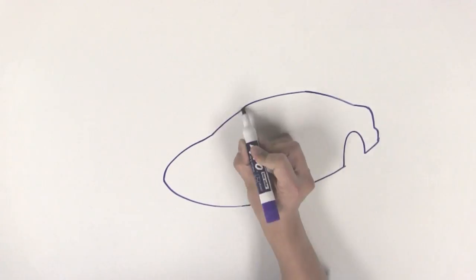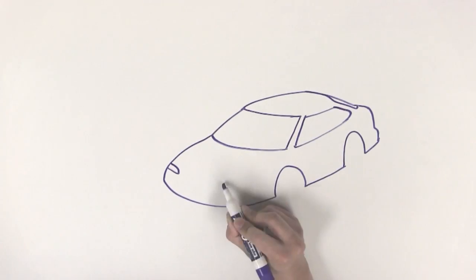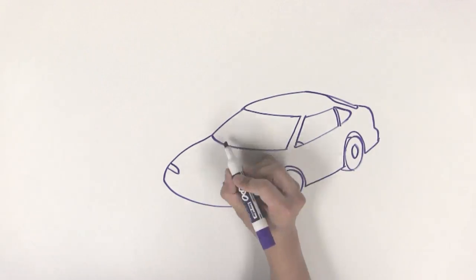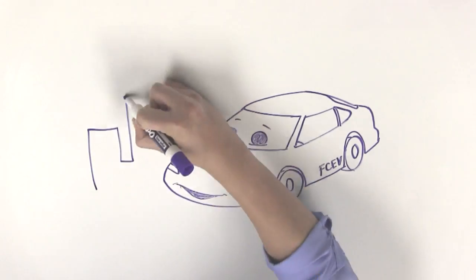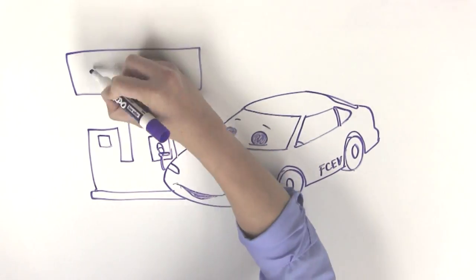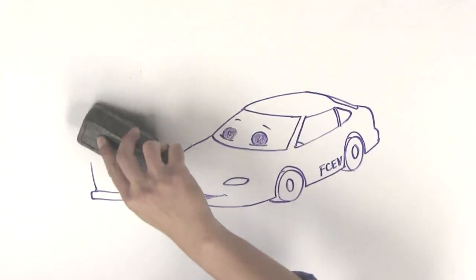This Draw My Life is a fictional story based on the true life of a hydrogen fuel cell electric vehicle. In 1999, I first came to California, a new kind of car that used old technology, fuel cells and hydrogen, to make electricity.